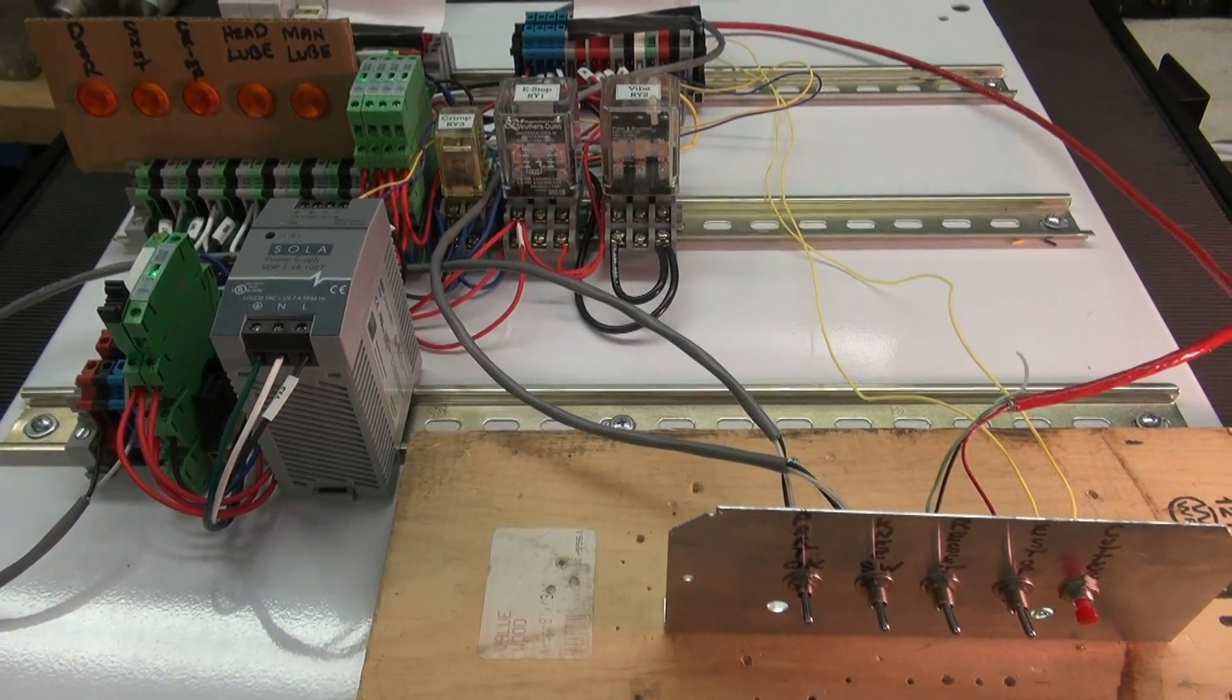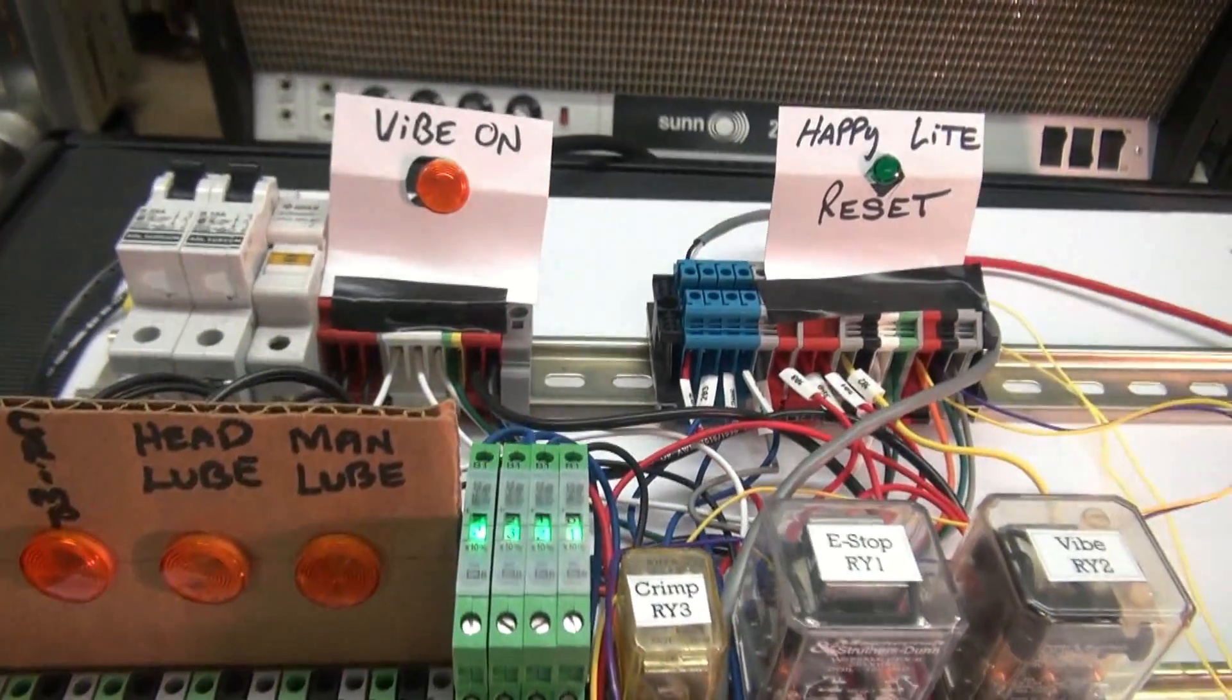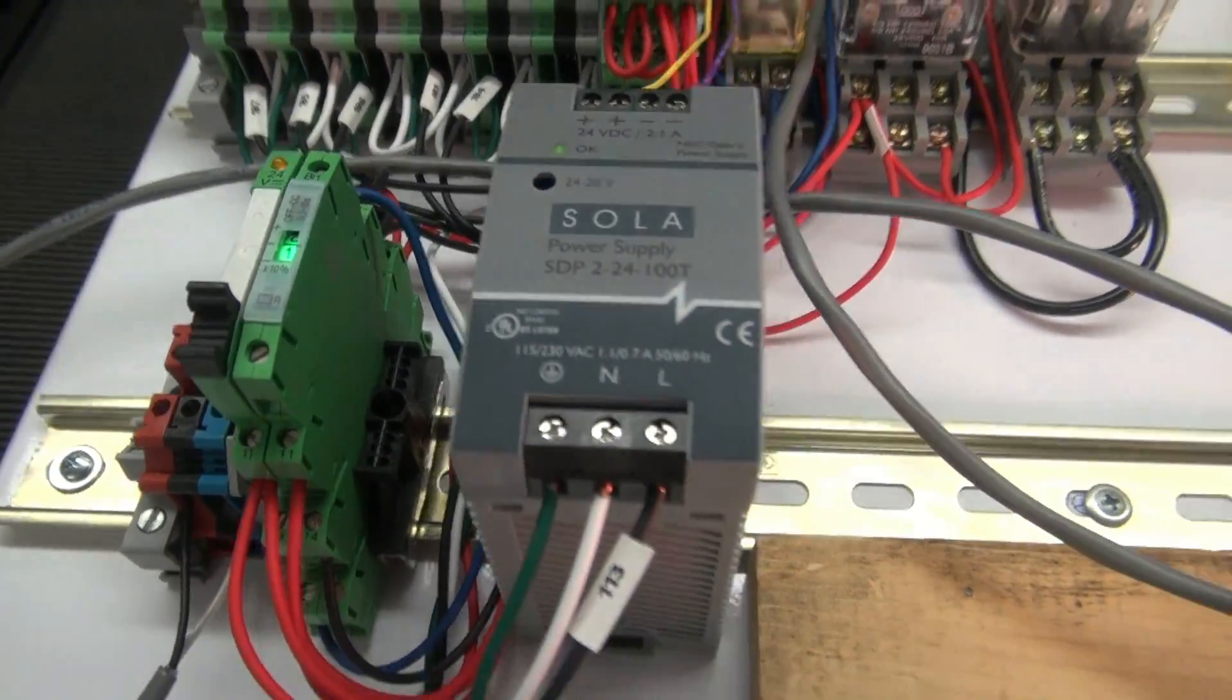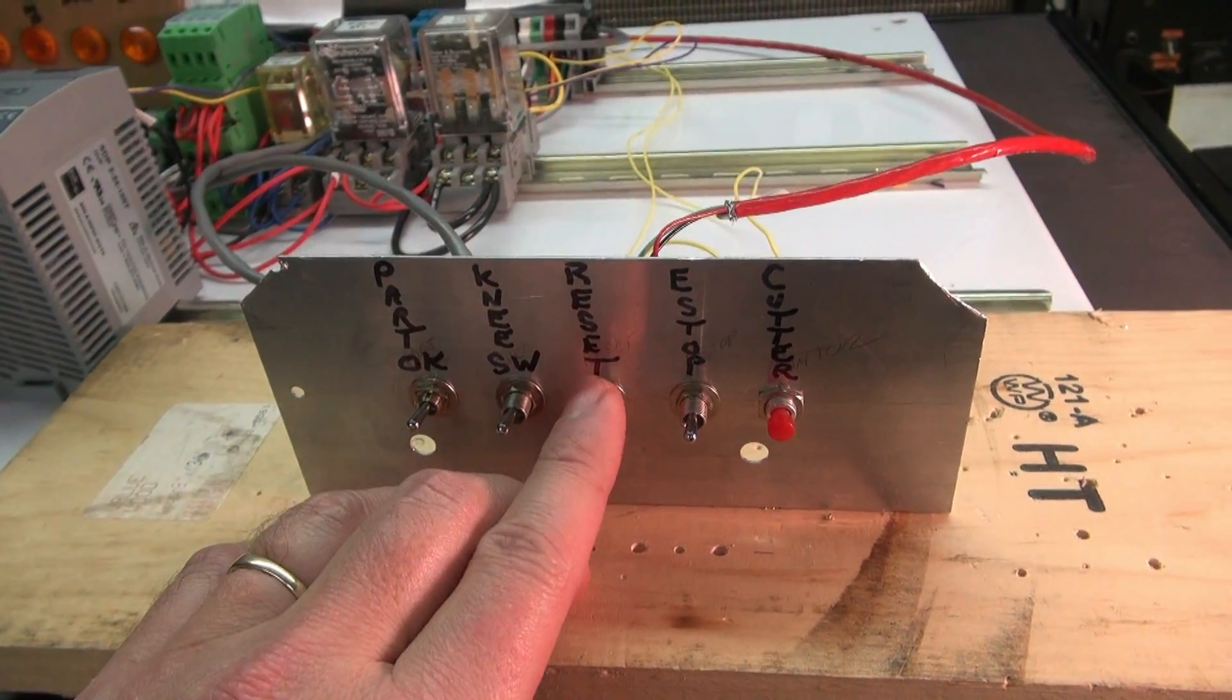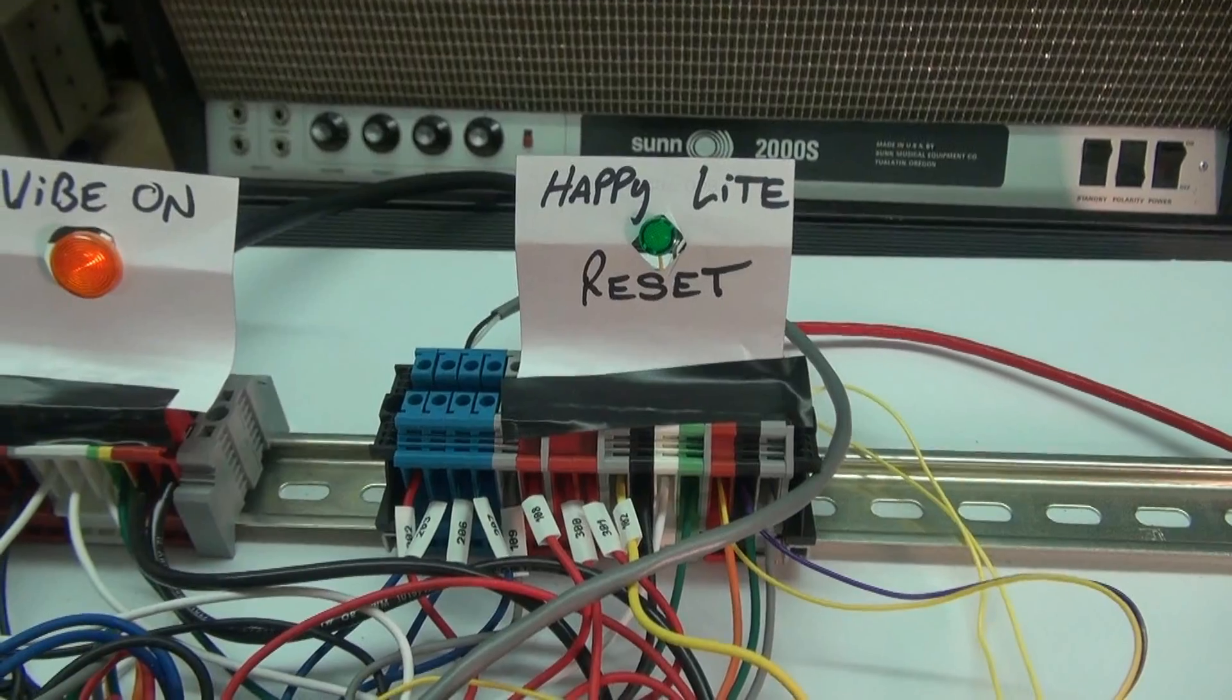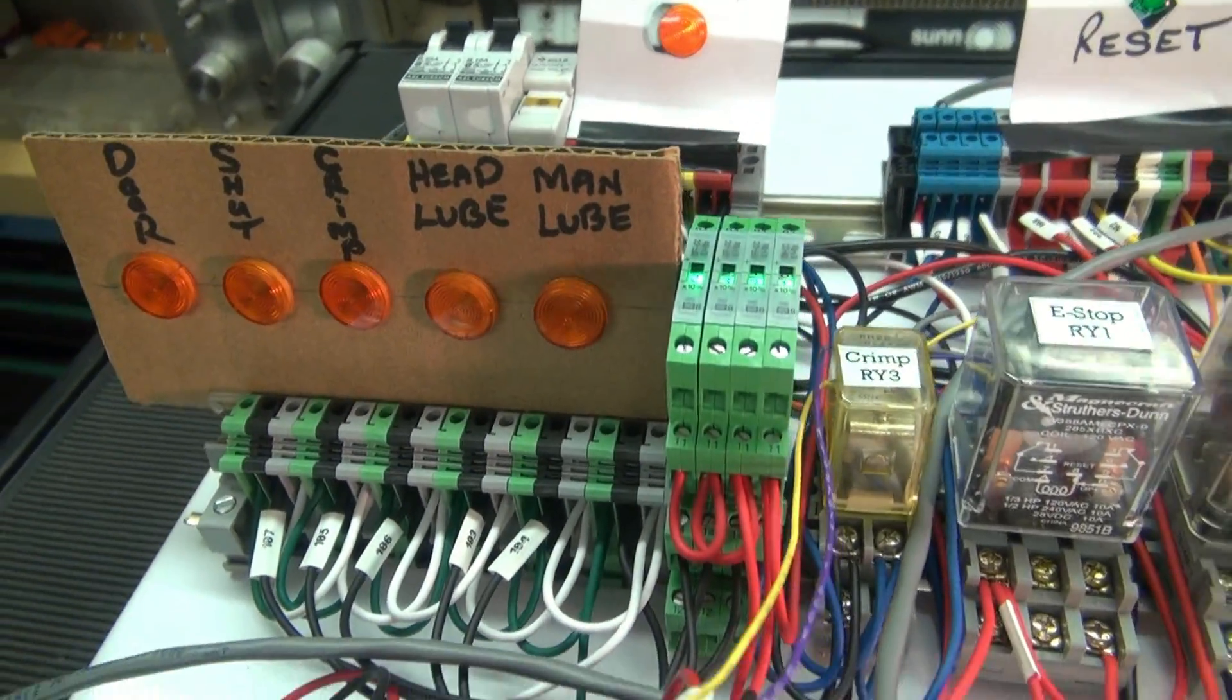Currently the machine is in idle mode meaning there's no outputs. Everything's off. She's just waiting. 24 volt supply is on. I have to go here and the operator says I'm ready to operate. He hits a reset. When he hits that you get the happy light and the vibrator starts up.